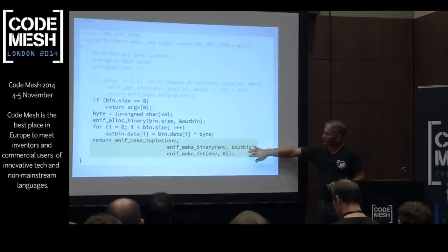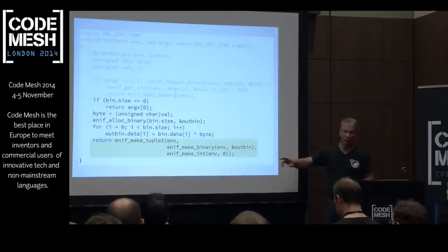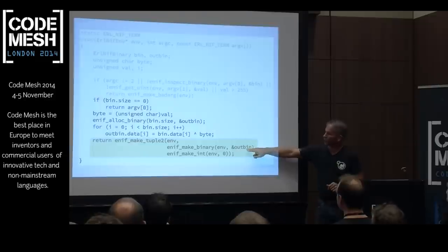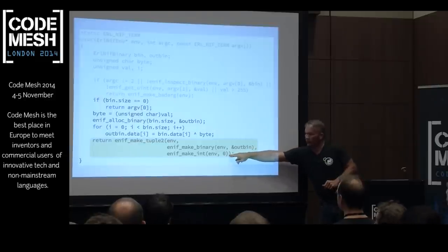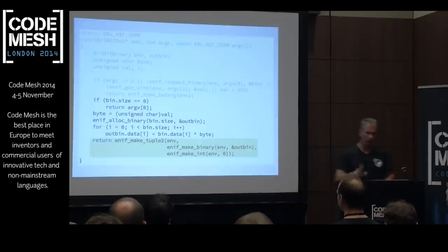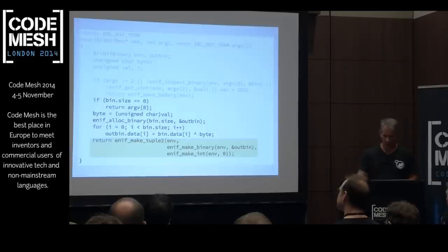Here we're returning our value. What we're returning is a tuple — our new binary and then an integer which is just set to zero. I'm going to explain what that is later. That's what we return.